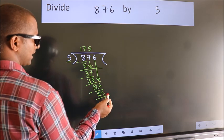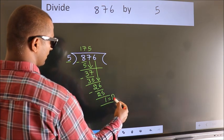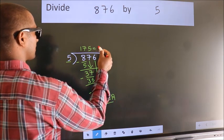No more numbers to bring it down. So, we stop here. This is our remainder. This is our quotient.